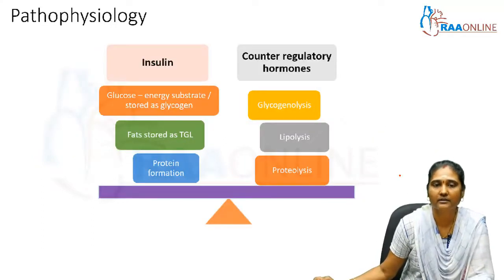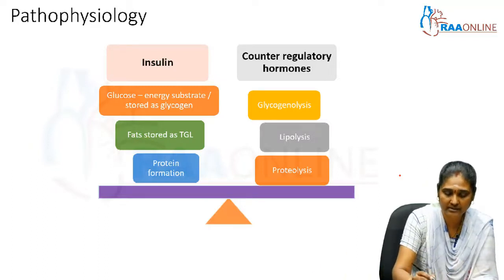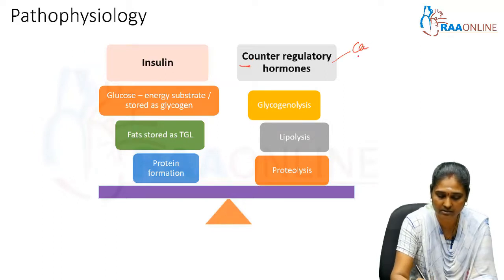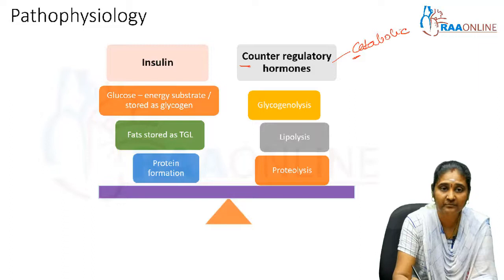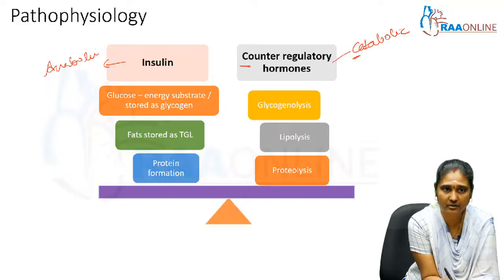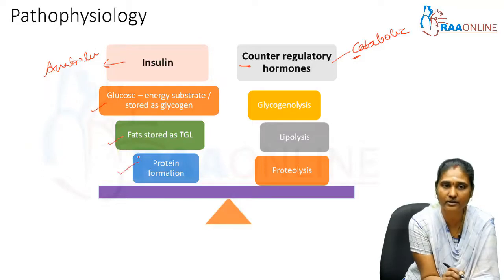Coming to the normal physiology of insulin and counter-regulatory hormones: insulin is an anabolic hormone, whereas counter-regulatory hormones such as catecholamines, epinephrine, growth hormone, and glucagon are catabolic hormones. The main functions of insulin are using glucose as an energy substrate, storing excess glucose as glycogen in the liver, storing fats as triglycerides, and promoting protein formation.